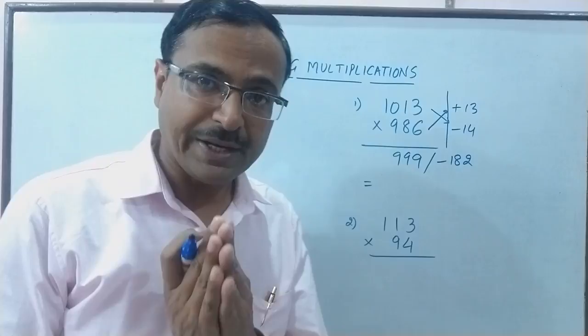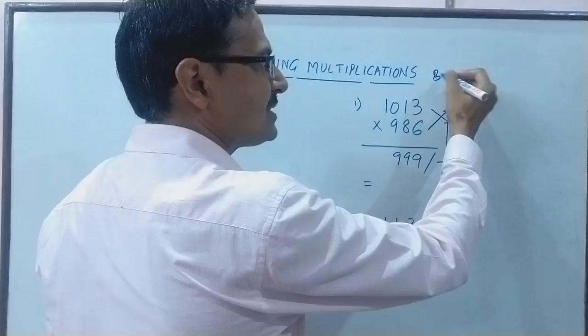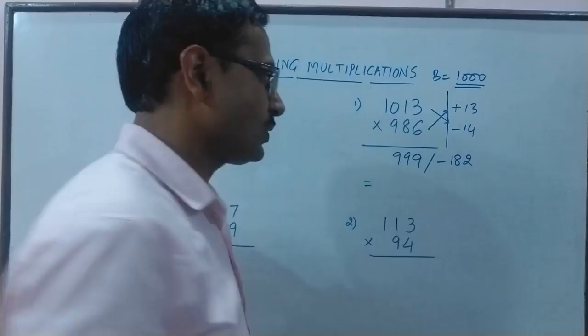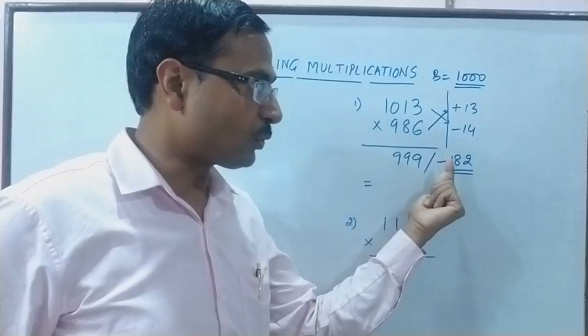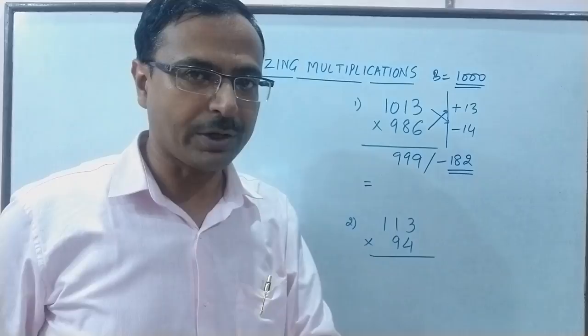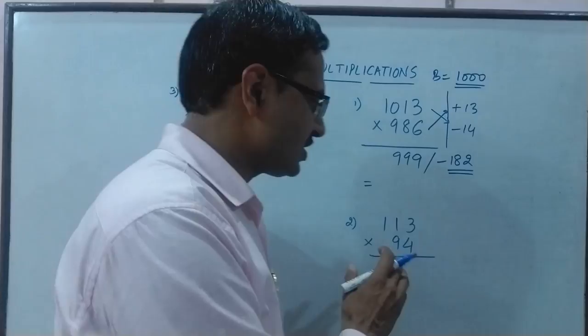Now what will be our answer? See in this question we have 1000 as the base quantity. Base is 1000 which contains three zeros and here we have three digits. The number of zeros in the base quantity should be equal to the number of digits we obtain here. If you obtain less digits here then you have to put zeros before that to equate the number of zeros.